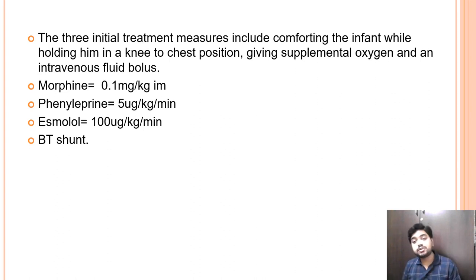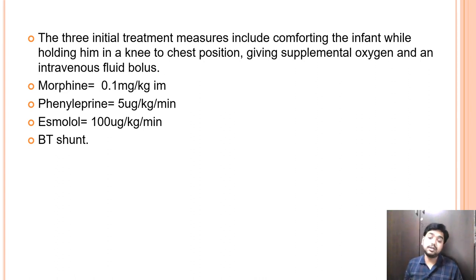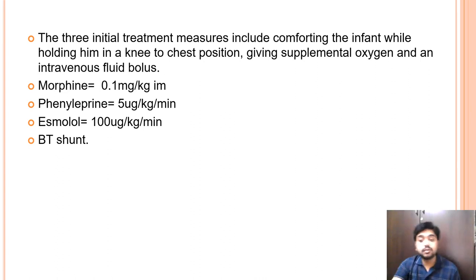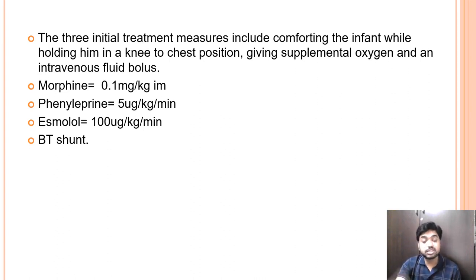Second, give 100% oxygen since the systemic circulation is receiving desaturated blood. Third, give IV fluid boluses as dehydration often triggers hypercyanotic spells. Further management includes intramuscular or subcutaneous morphine, then phenylephrine infusion at 5 mcg/kg/min. If not responding, escalate to esmolol infusion at 100 mcg/kg/min. If still not responding, intubate and ventilate to prevent life-threatening injury. Finally, proceed to urgent emergency BT shunt placement as a surgical intervention.